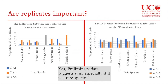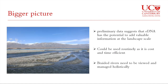The bigger picture: our preliminary data suggests that environmental DNA has the potential to add valuable information at the landscape scale. This could be used routinely as it is cost- and time-efficient. It could also inform management that braided rivers need to be viewed as a holistic ecosystem rather than as separate environments.